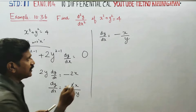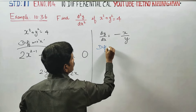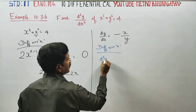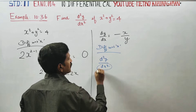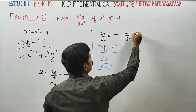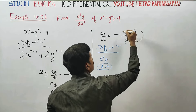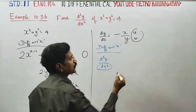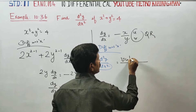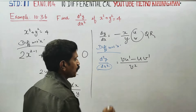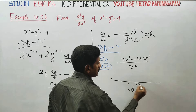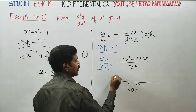Now you can see the second order differentiation — how to differentiate dy/dx again with respect to x. If you differentiate the same thing, it is d²y/dx². We apply the quotient rule: u/v, where the formula is (v·u' - u·v') divided by v².